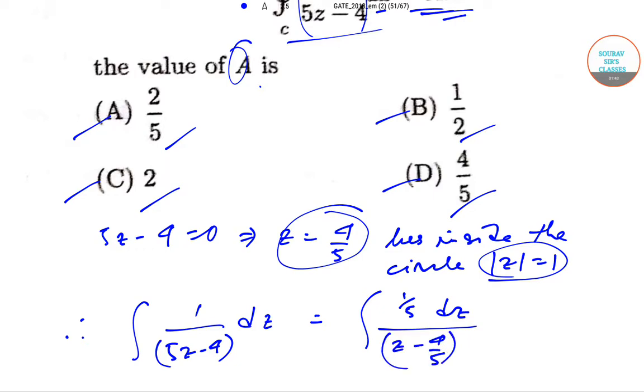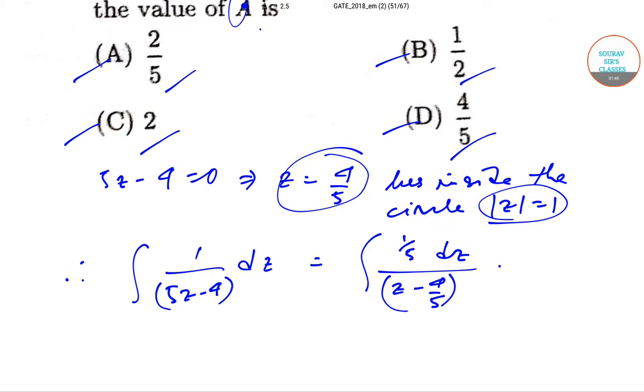Ultimately this comes down to twice pi i times f of 4 by 5. That implies 2 pi i times f of 4 by 5, which is equal to 2 pi i times 1 by 5, which equals 2 by 5 pi i, which is equal to A pi i as has been already given. Therefore the value of A is equal to 2 by 5, which is option A.